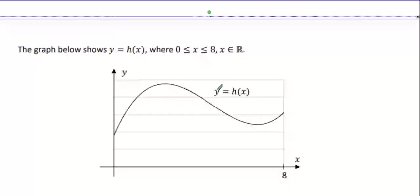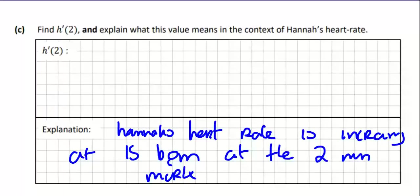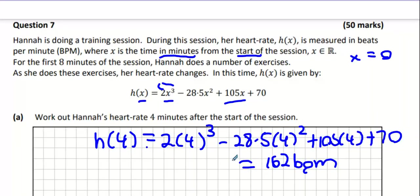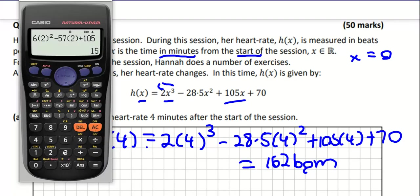Now let's have a look at the next one. The graph shows h of x from 0 to 8. Now that would be the original formula. I'm just going to enter this into my table function. So 2x cubed minus 28.5x squared plus 105x plus 70 and start at 0, stop at 8 and step at 1.